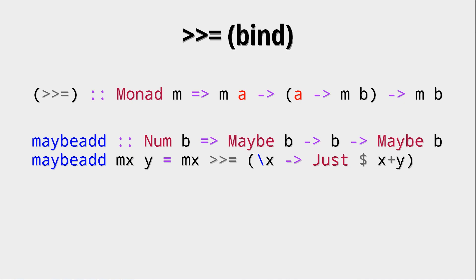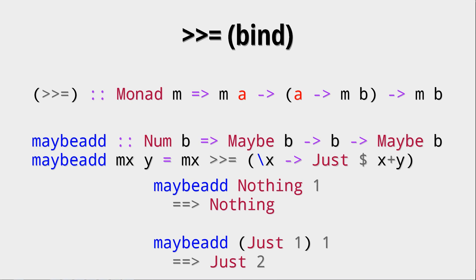Why not write a function with this, which we will call maybe_add, which takes a maybe of x and a value y, and then adds them together. The important thing is that we still have to return a maybe after this, because the bind operator has to return a monad. So we just return this Just of the sum of those two values.